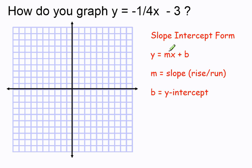Since it's in this y equals mx plus b form, we know that the number in the m position represents the slope, or the rise over run.